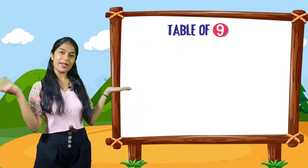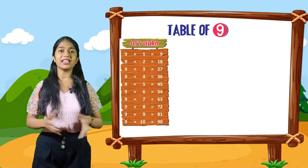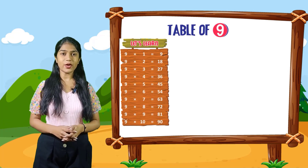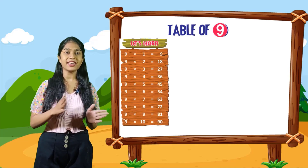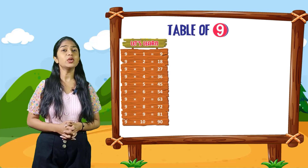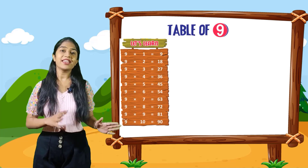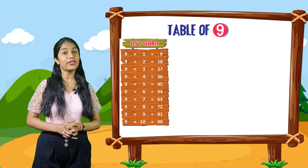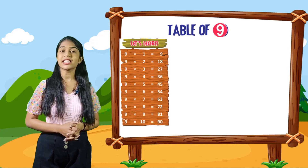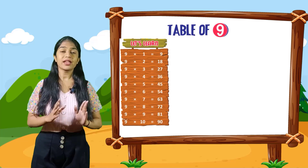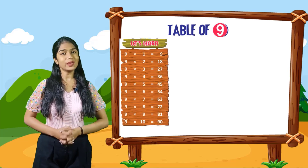Kids, now we will do the table of 9. Let's learn. 9 into 1 is equal to 9. 9 into 2 is equal to 18. 9 into 3 is equal to 27. 9 into 4 is equal to 36. 9 into 5 is equal to 45. 9 into 6 is equal to 54. 9 into 7 is equal to 63. 9 into 8 is equal to 72. 9 into 9 is equal to 81. 9 into 10 is equal to 90.